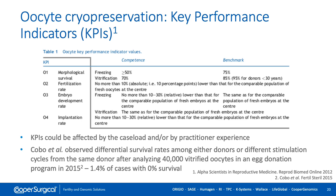Regarding oocyte cryopreservation, according to the Alpha Consensus, predicted values for survival, fertilization, embryo development, and implantation rates favor vitrification over slow freezing. The implantation rate should be the same as for the comparable population of fresh embryos in the clinic, but may be lower. These KPIs can be affected by caseload and experience. Anna Koba and colleagues, after analyzing 40,000 vitrified oocytes in an egg donation program in 2015, observed differential survival rates among donors and cycles, with 1.4% of cases showing zero survival rate.